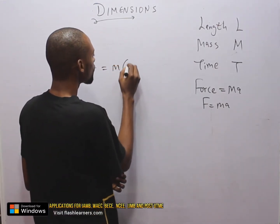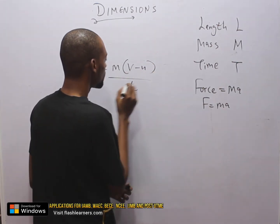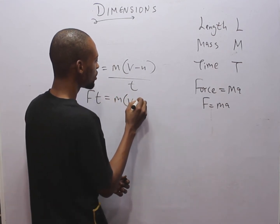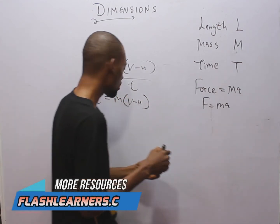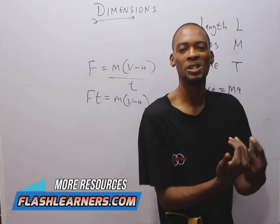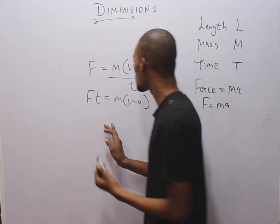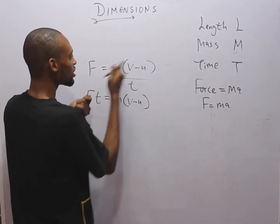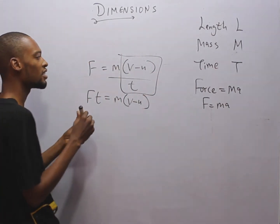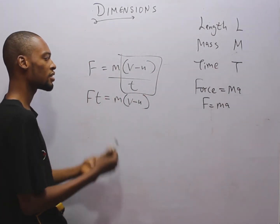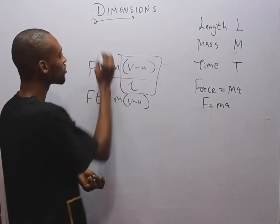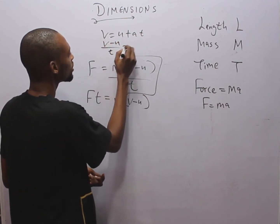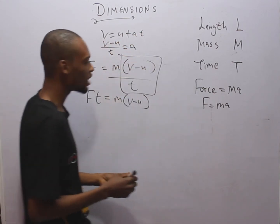So force equals m times (v minus u) over time, where v minus u is the change in velocity — final velocity minus initial velocity. Change in velocity with time is acceleration. From the first equation of motion, v equals u plus at, so v minus u over t obviously equals a.